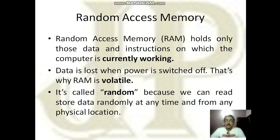The next point is that RAM is random. It means we can read or store data randomly at any time and from any physical location. This is a very beneficial point, because in earlier times, magnetic tape was used to store data and you could only read or store data in magnetic tape in a sequential order.